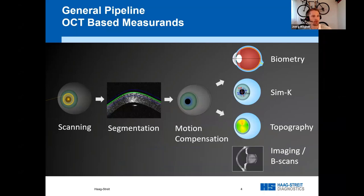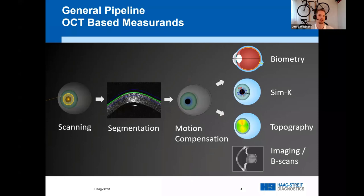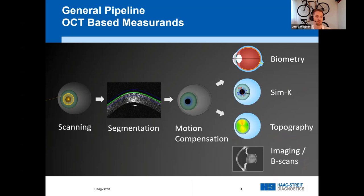Our OCT pipeline consists of three steps: the two-dimensional scanning of the eye, the segmentation of the cornea in the resulting scan, and the motion compensation. Based on this pipeline, we determine all the OCT-based measurements. This includes biometry, simulated keratometry, topography, and imaging in the 4P scans. Therefore, scanning and motion compensation are essential for the quality of the measurements.